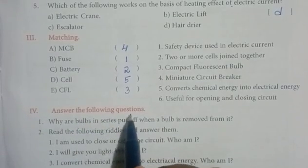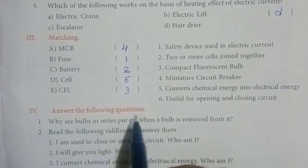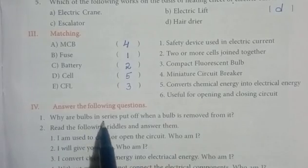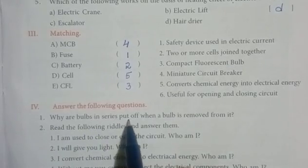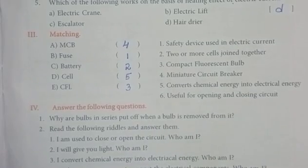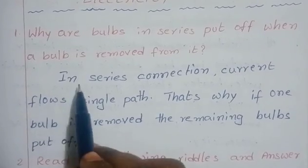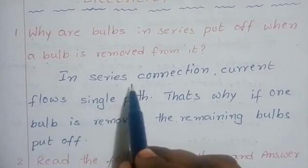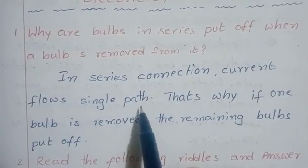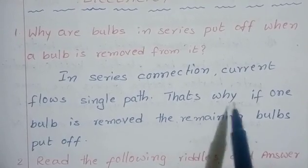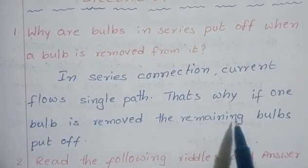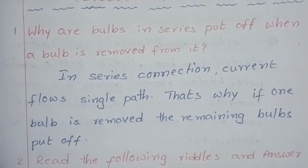Answer the following questions. First question: Why are bulbs in series put off when a bulb is removed? In a series connection, current flows through a single path. That is why if one bulb is removed, the remaining bulbs are put off.